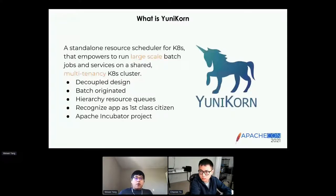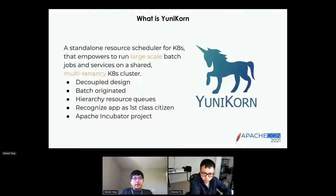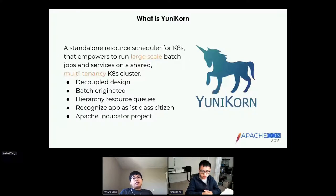First of all, what is YuniKorn? YuniKorn is a standalone resource scheduler for Kubernetes that empowers running large-scale batch jobs and services on a shared multi-tenancy Kubernetes cluster. The key keywords here are large-scale batch and multi-tenancy — that's what we're focused on.